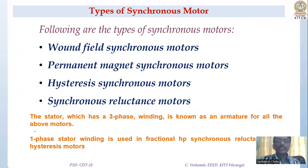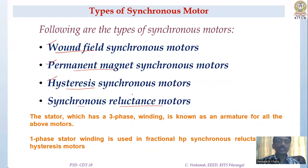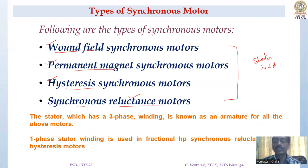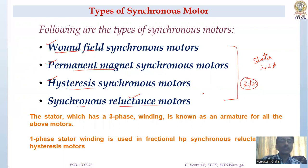Coming to the classification of synchronous motors, there are broadly four types: wound field type, permanent magnet synchronous motor, hysteresis synchronous motor, and synchronous reluctance motors. In all these cases the stator is a three-phase system with a three-phase winding that produces rotating flux. The rotor construction is different for each motor type.